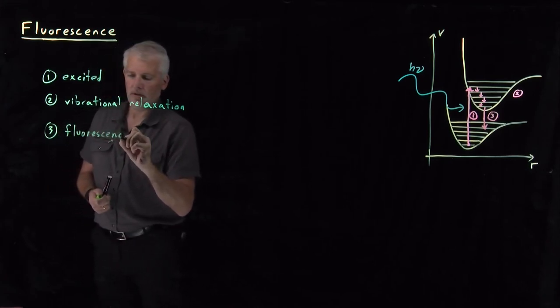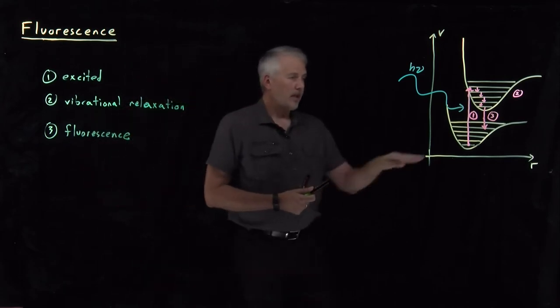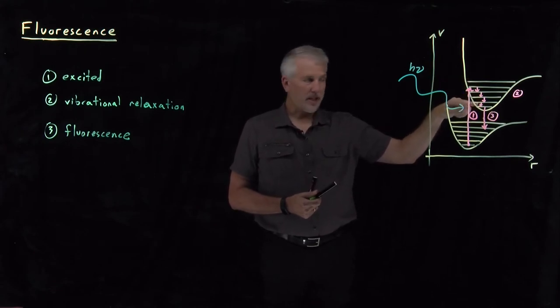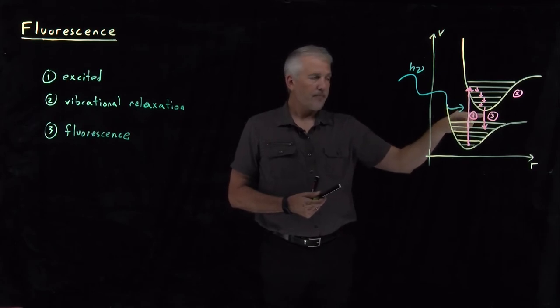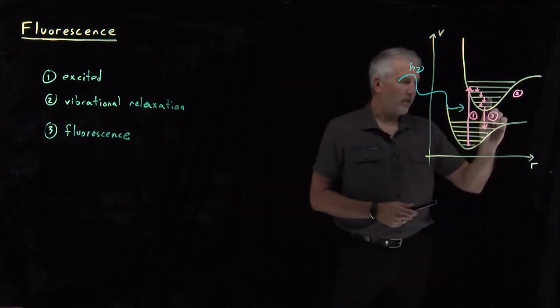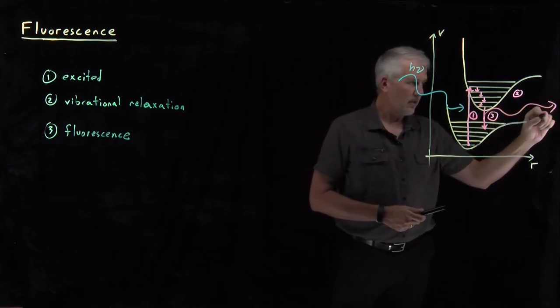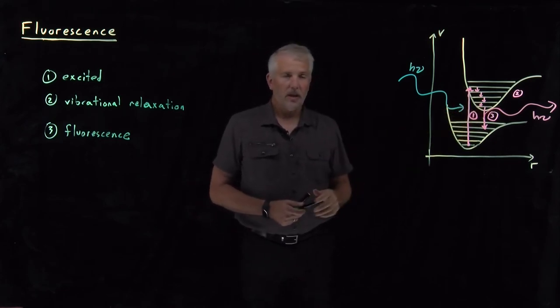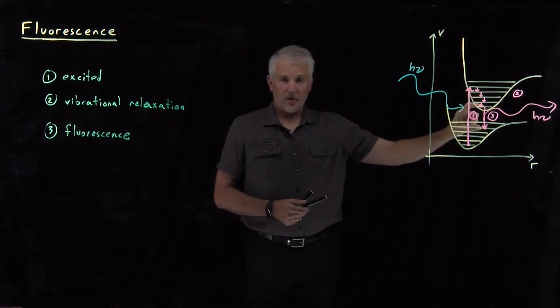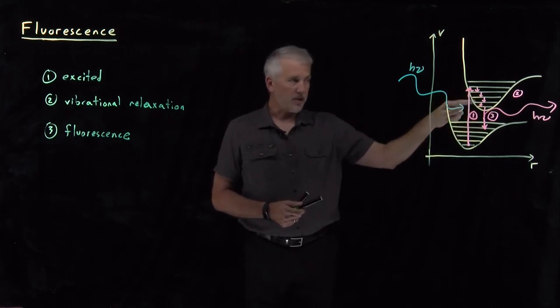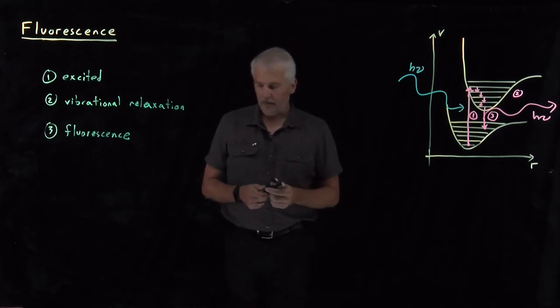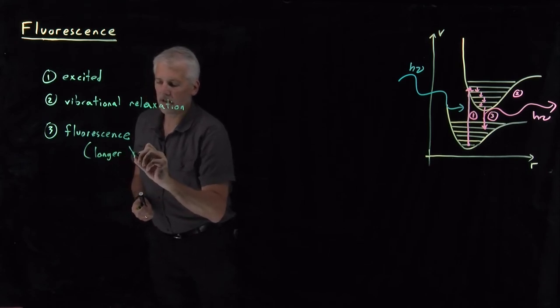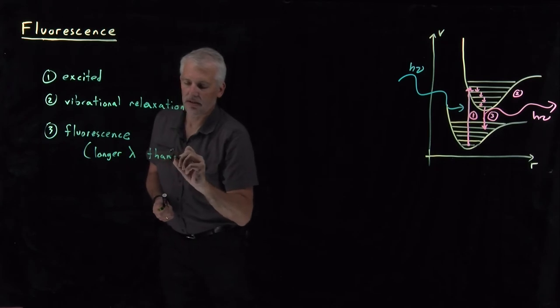A molecule fluoresces after we excite it electronically. It relaxes vibrationally down usually to the ground vibrational state and then falls down, undergoes electronic relaxation. As it does that, it's going to emit a photon. That loss of energy is going to be paid for by emitting a photon. That emission is guaranteed going to have smaller energy than the excitation because of those intervening vibrational relaxation steps. So that fluorescence step is going to have lower energy or a longer wavelength than the excitation photon.